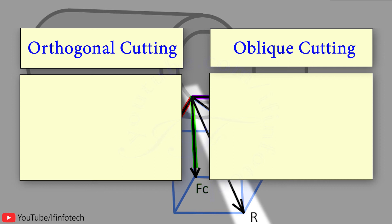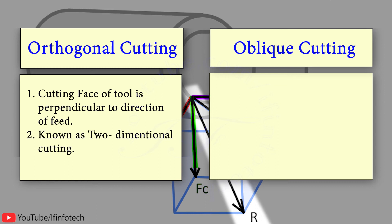So here we have two basic cutting processes: orthogonal cutting and oblique cutting. In orthogonal cutting, the cutting face of tool is perpendicular to direction of feed and it is known as two-dimensional cutting.